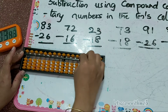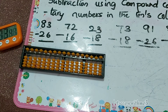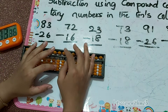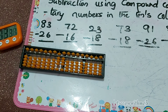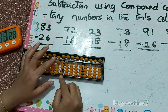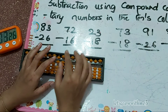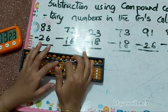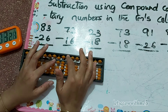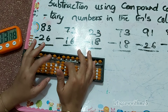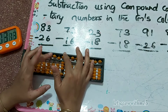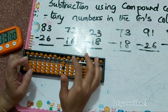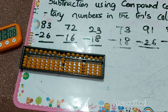83 minus 26. So minus 2 in the tens column, minus 6 in the ones column. How to do minus 6? Papa down, mama down, baby down — minus 10 plus 5 minus 1. So the answer is 57.